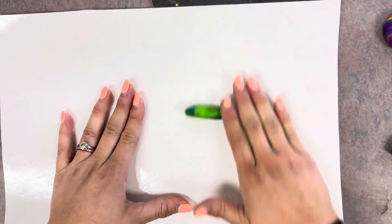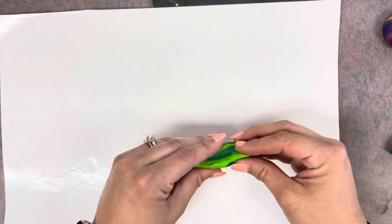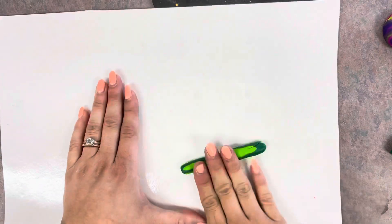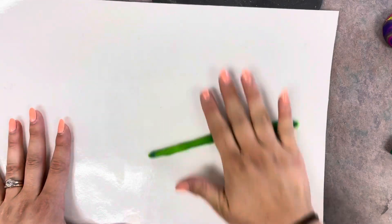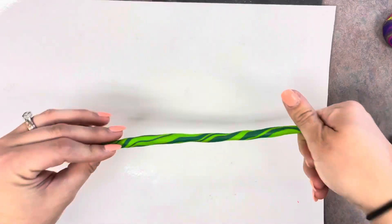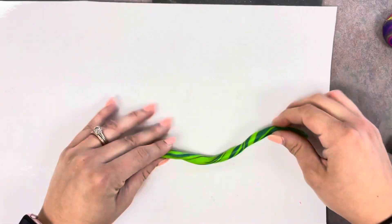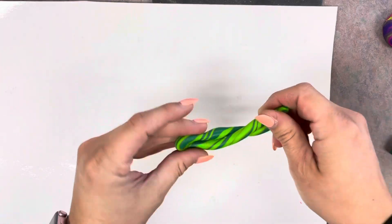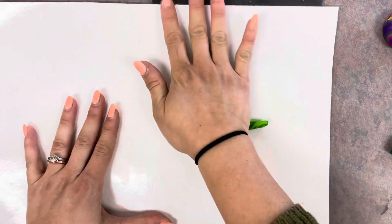You just kind of play around with it as you keep folding it, rolling it, twisting it, and rolling it until you get the desired effect. If you do this too much, you're just going to end up mixing your colors together completely, so make sure you stop at a certain point and leave it alone.